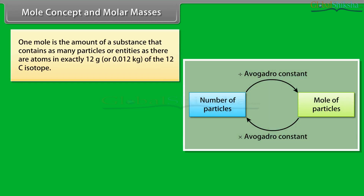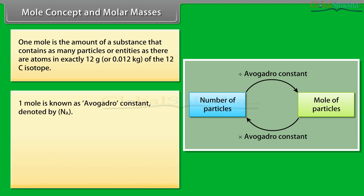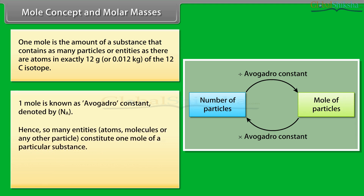Mole concept and molar masses: one mole is the amount of a substance that contains as many particles or entities as there are atoms in exactly 12 grams (0.012 kg) of the carbon-12 isotope. This number is known as Avogadro's constant, denoted by Nₐ. Atoms, molecules, or any other particles constitute one mole of a particular substance.